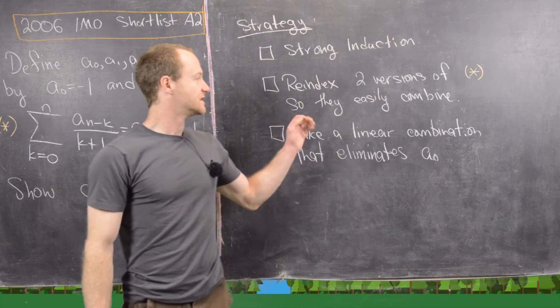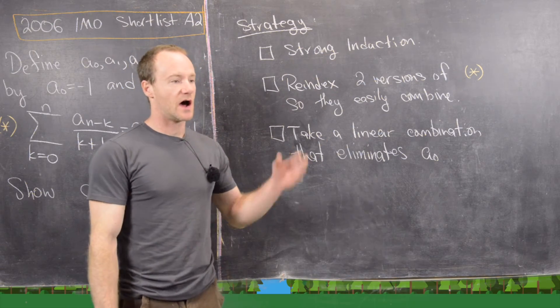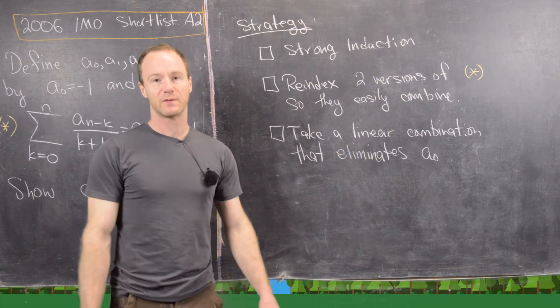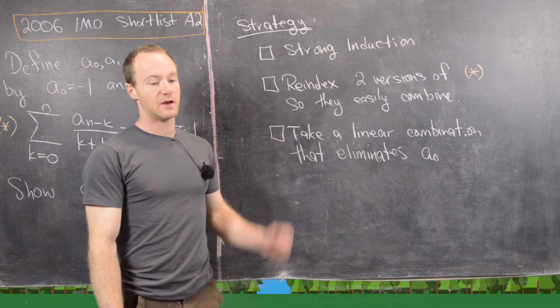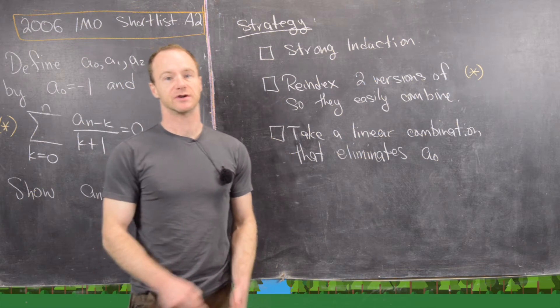Why eliminate A₀? Notice that A₀ is a negative term and we're trying to show everything is positive, so it makes sense to eliminate it as part of our goal of proving that aₙ is greater than zero for all n greater than or equal to 1.